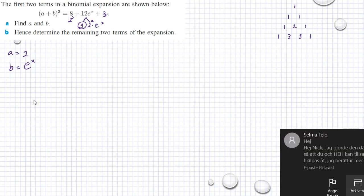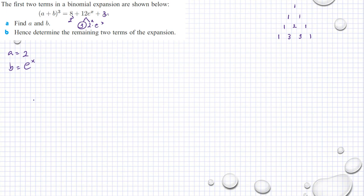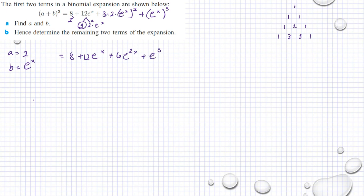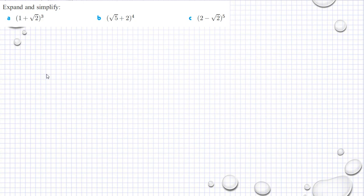Expanding now: plus 3 multiplied by 2 multiplied by e raised to x, raised to 2, plus e raised to x raised to 3. So we have 8 plus 12e raised to x plus 6e raised to 2x plus e raised to 3x.